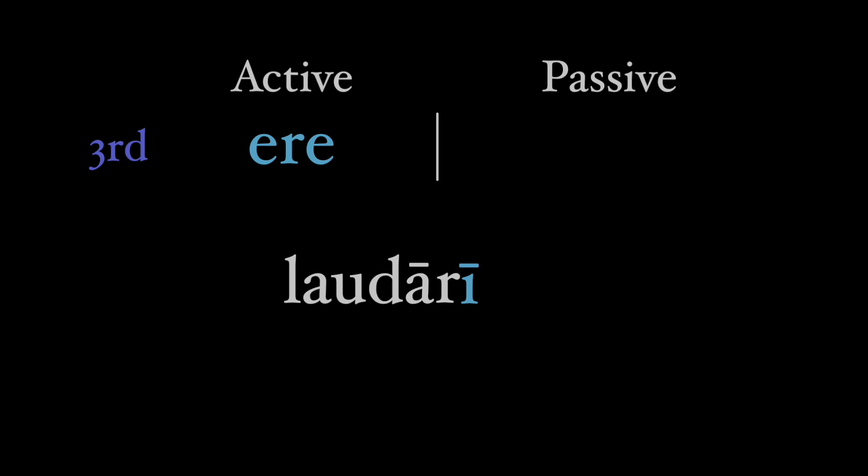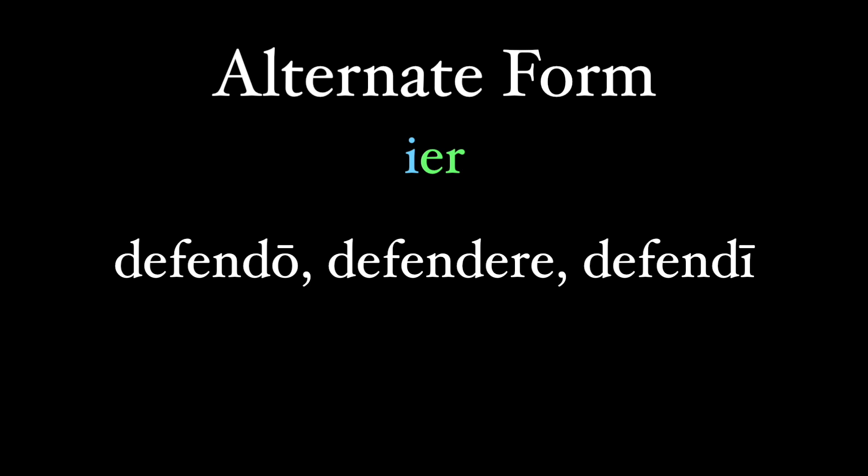There is an old Latin alternate version of the present passive, the ending -ier, and we also see this in poetry. This is probably still the ī passive ending combined with the active -ere ending. Some think that it might have started with third conjugation verbs like dēfendō, dēfendere, dēfendī.